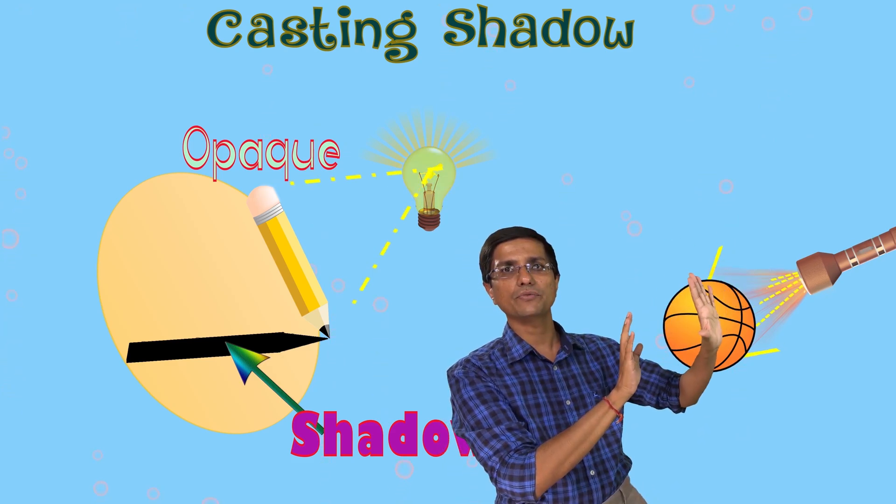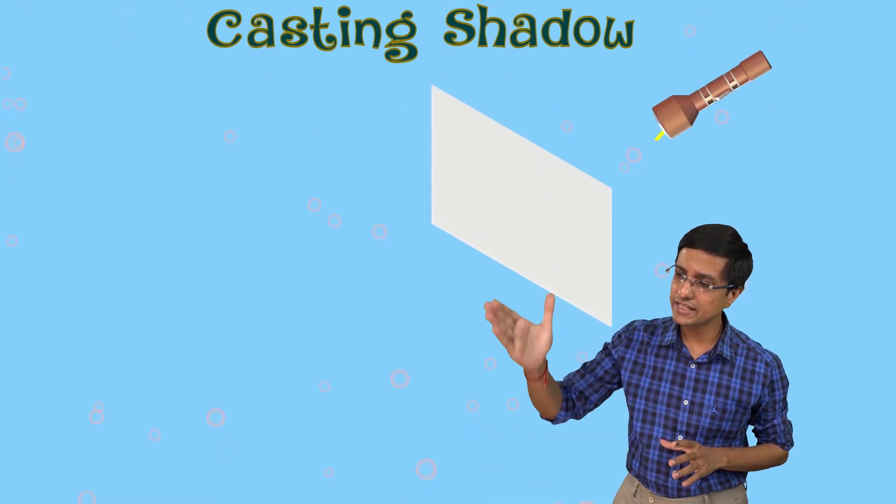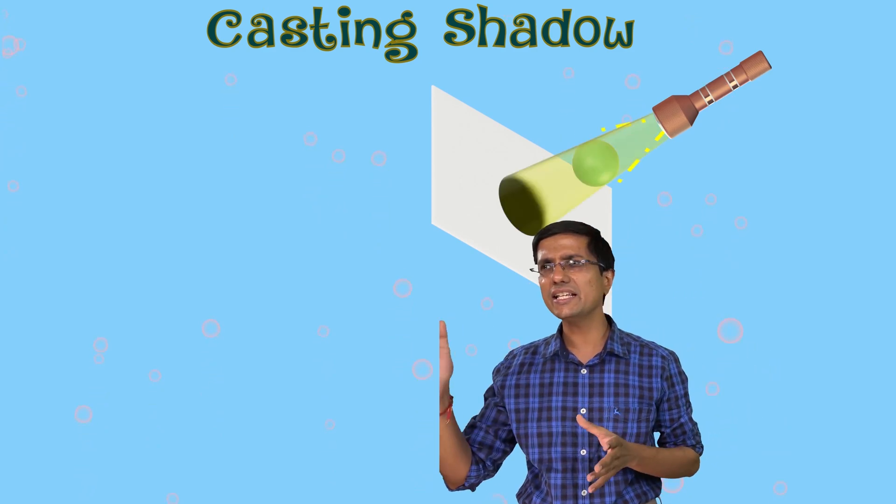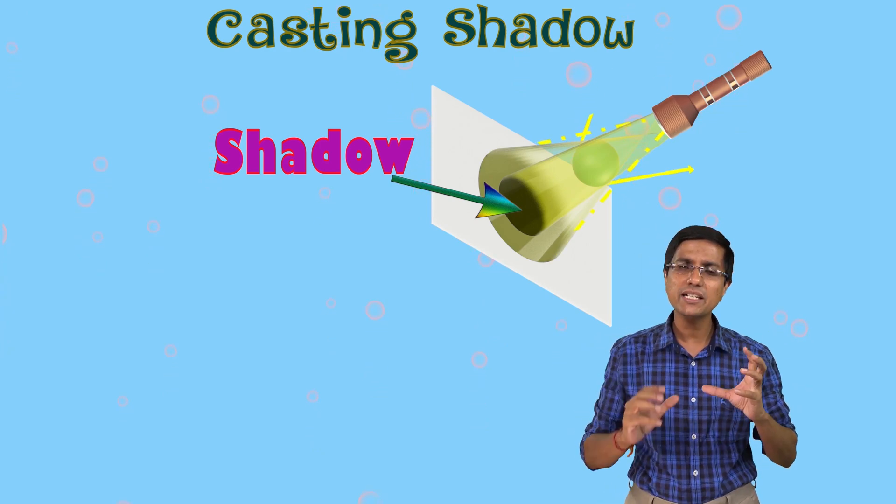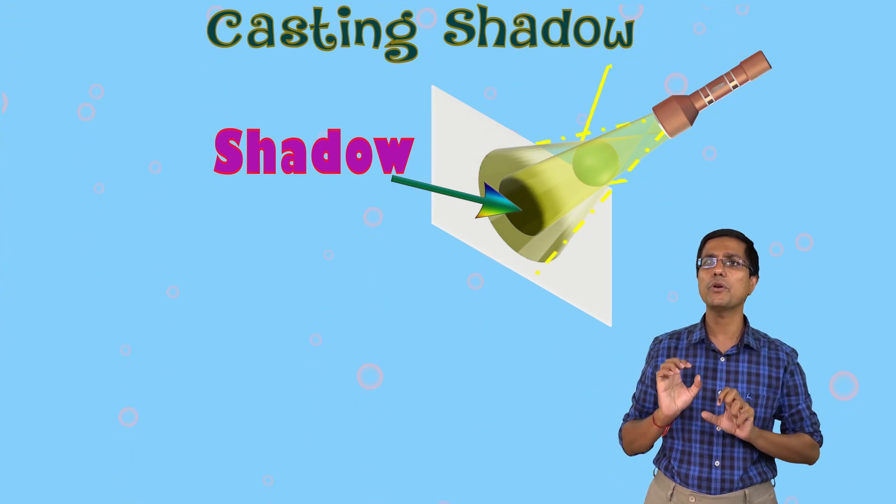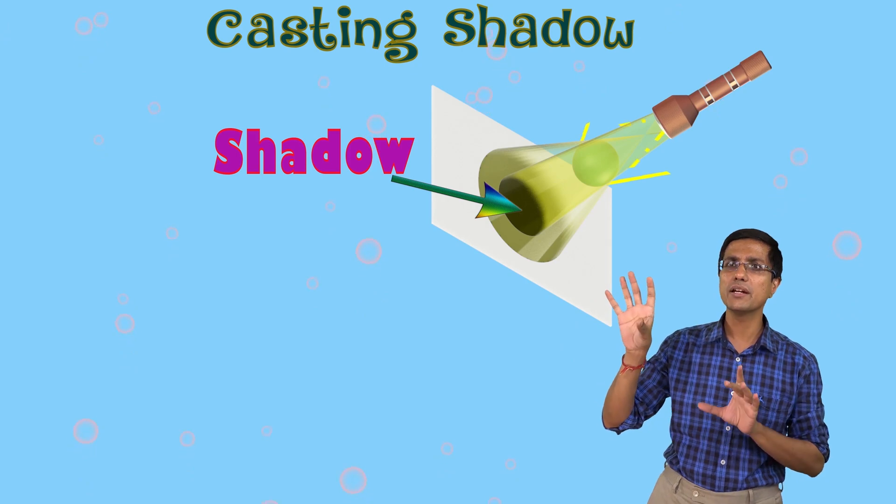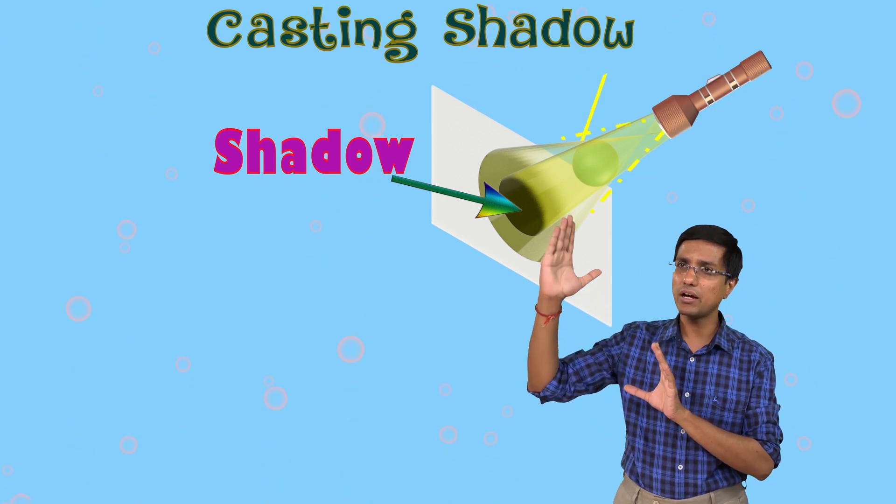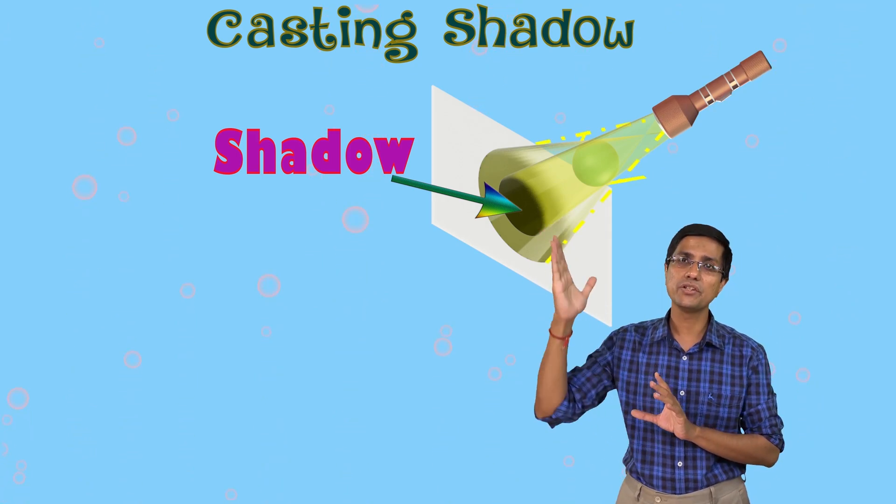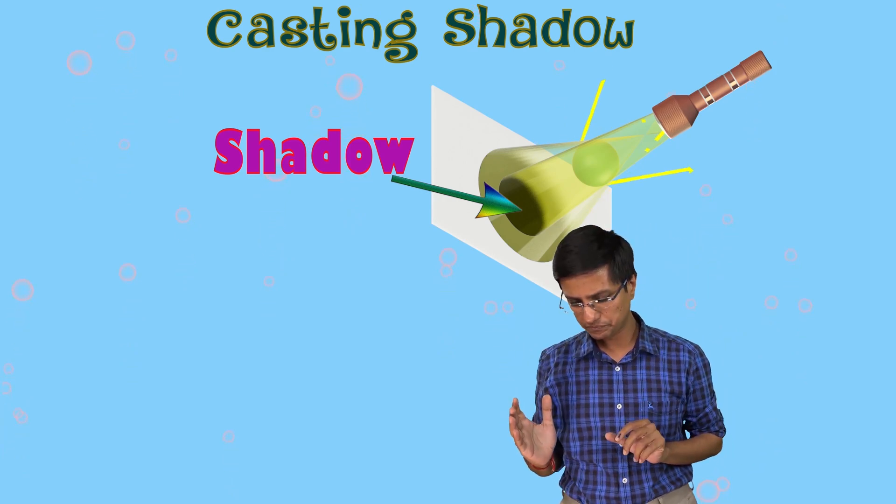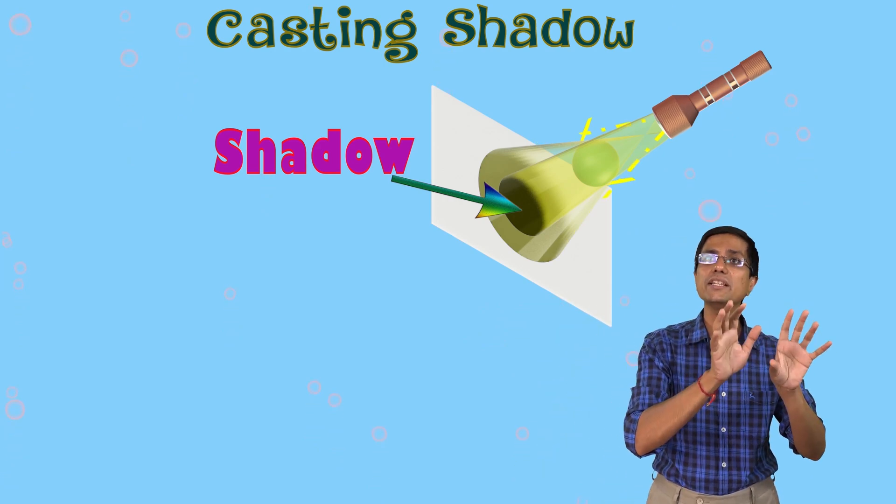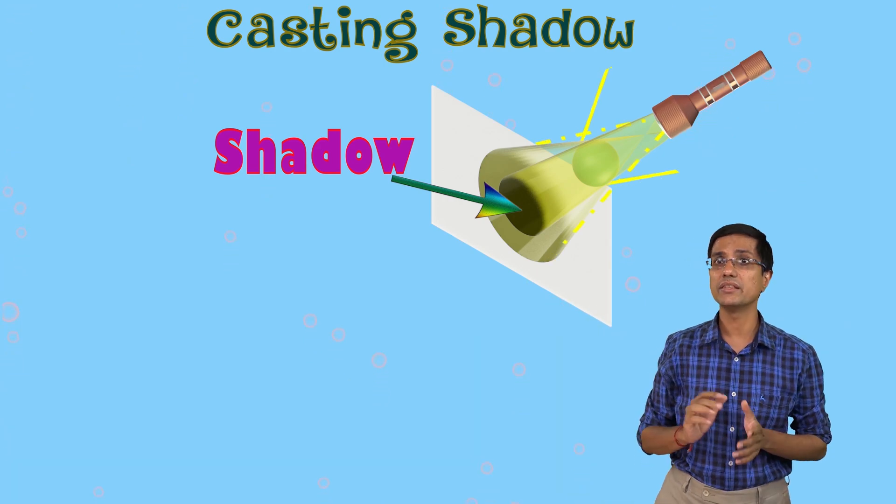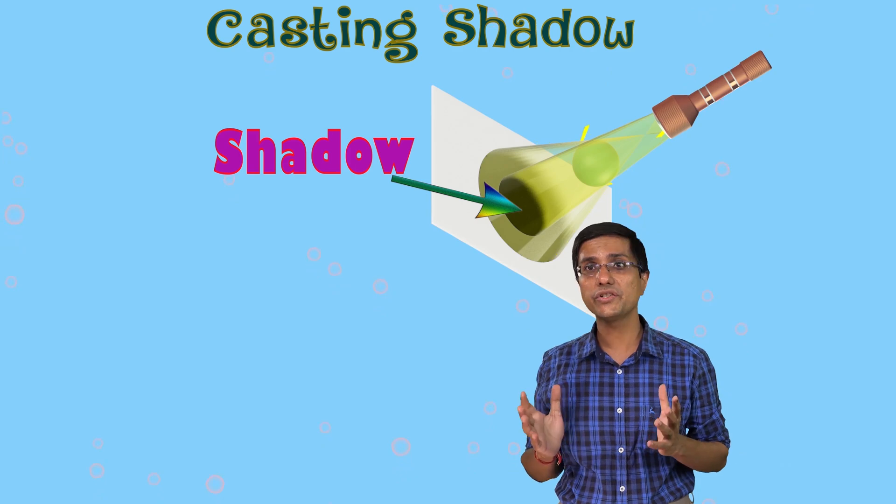It's blocking part of the light. If I were to place a screen which is really a sheet of paper, anything on which I can capture the light, if I were to place it right here, what I would see? I would see that the part of the light which is blocked by this object, there would appear to be a dark region, a very dark region on this sheet of paper which we will call it a screen. So on this screen there would be a dark region seen where the object is blocking the light of the source. This dark region is known as a shadow.